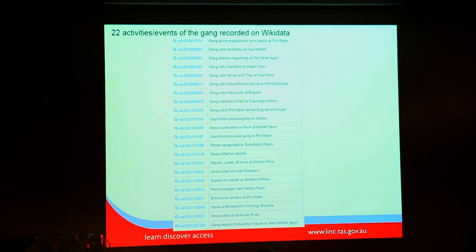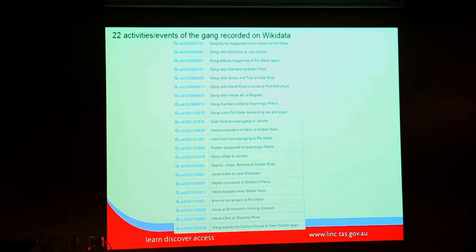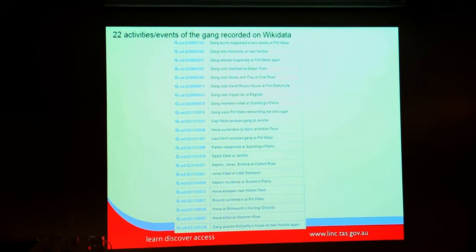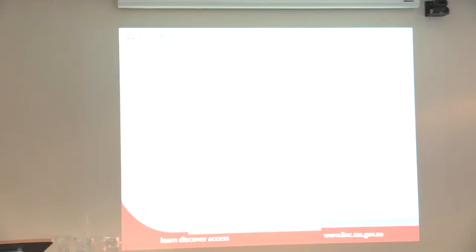You'll notice the Q numbers in blue — they are links to Wikidata items. Wikidata is a sister project of Wikipedia; instead of articles, this is more like the data side of Wikis. If you think of the Wikidata items as containing statements, which are really fields that express links to things. The best way to demonstrate that is to take that first one: 'gang burns magistrates' corn stacks at Pitwater' — that's my invention, and I've done one for each of those 22. By the way, they also burned down the police chief's stacks at Pitwater, so they really started off their career with a bang.